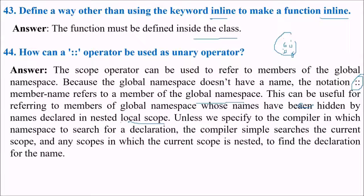Unless we specify the compiler in which namespace to search for a declaration, the compiler simply searches the current scope and any scope in which the current scope is nested to find the declaration of that name. Now you understand why and how we can use scope operator as a unary operator to access the global member of the global namespace.